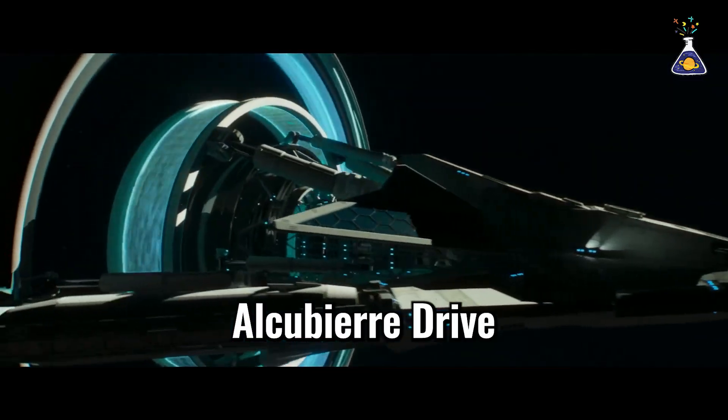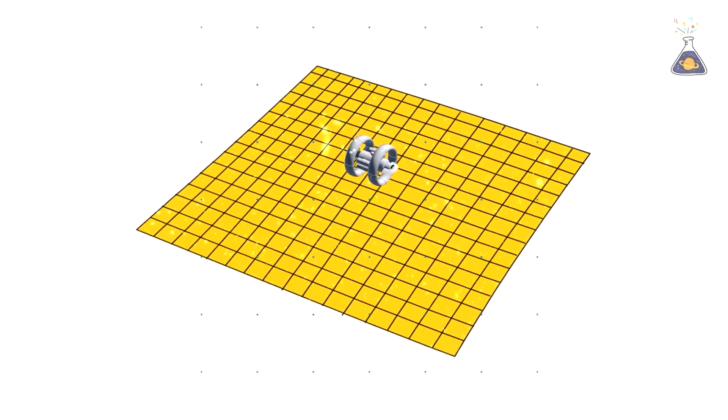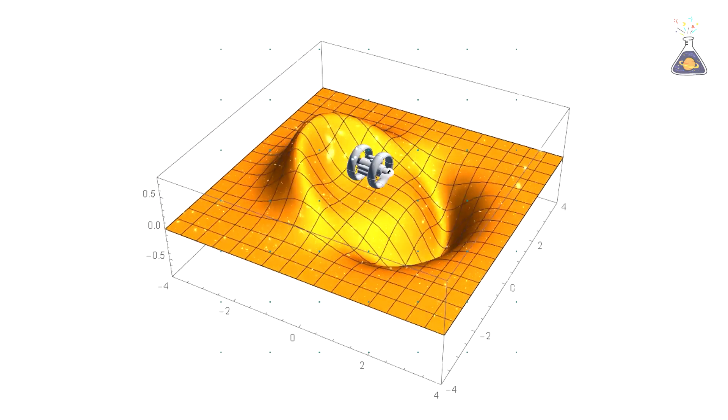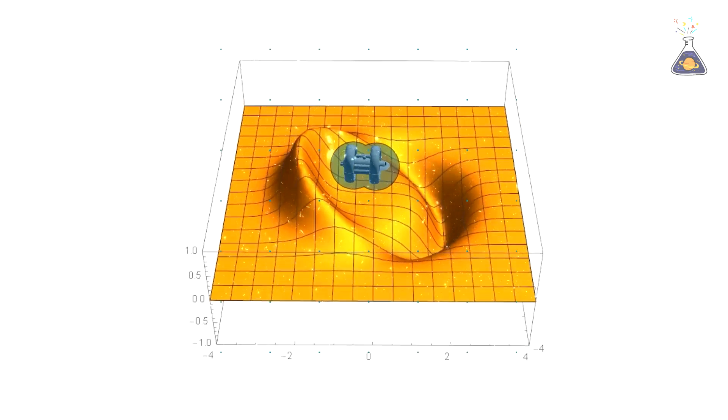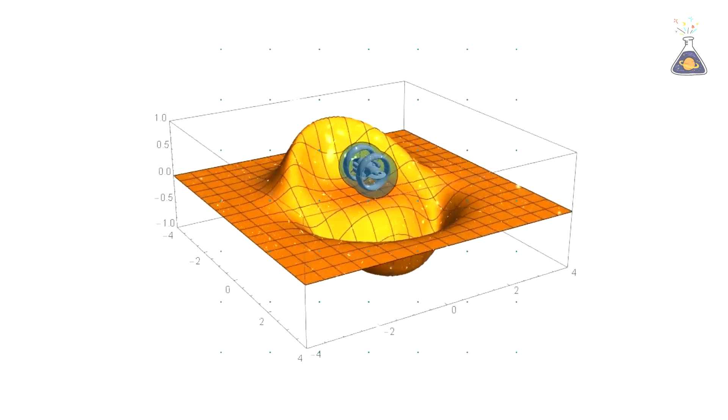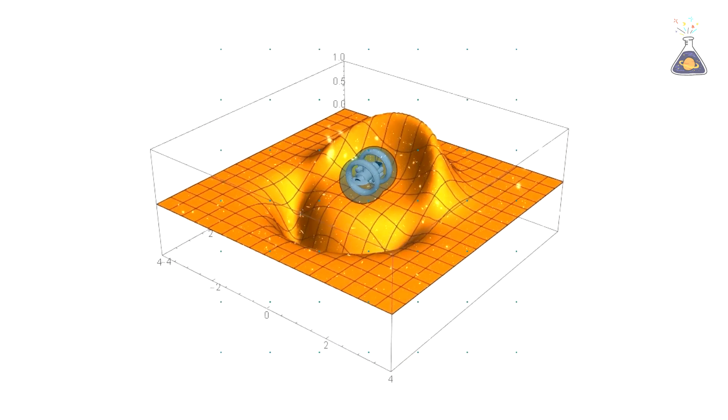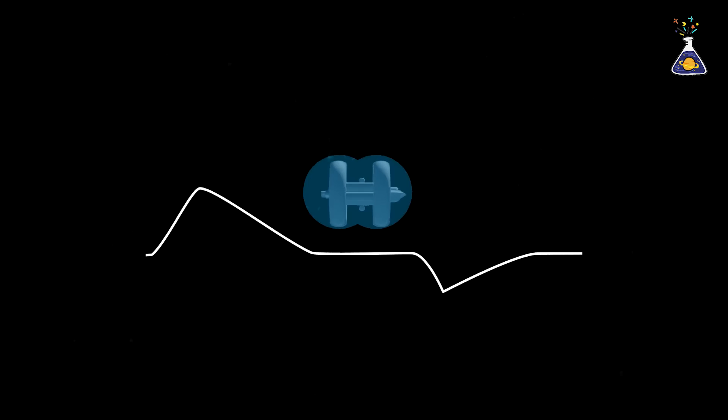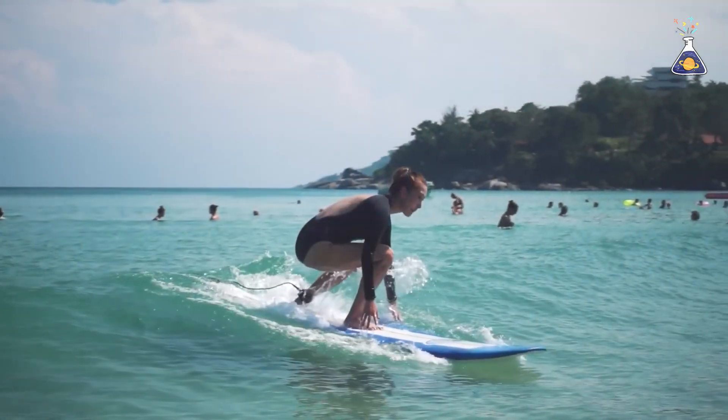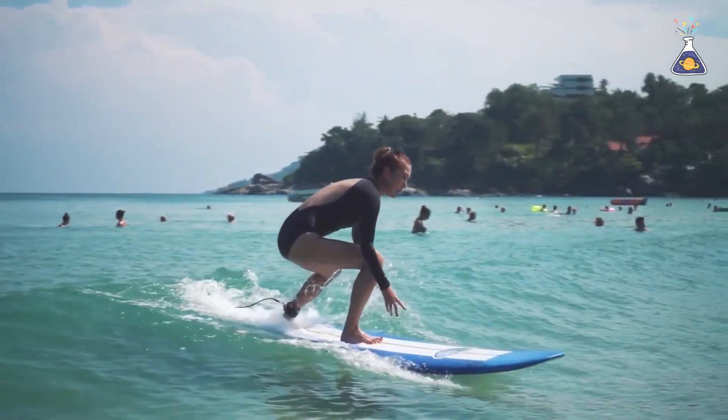It became known as the Alcubierre Drive. The Alcubierre Drive doesn't accelerate the spacecraft. It works by distorting the space around it, compressing space in front of the spacecraft and expanding space behind it. The expanding space behind pushes the spacecraft forward, while the contracting space in front pulls it along. As a result, the spacecraft moves like a surfer on a wave, staying still relative to the wave itself, yet riding the distortion of space at faster than light speed.